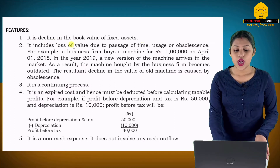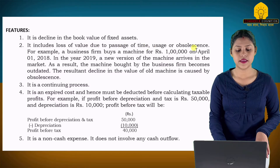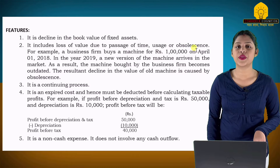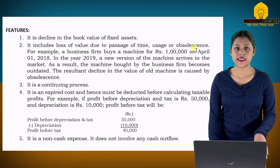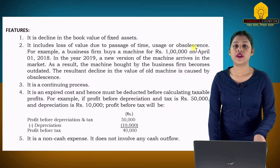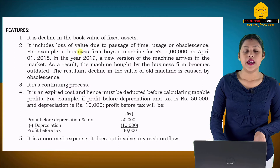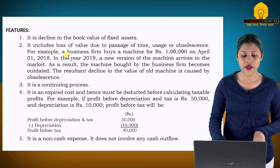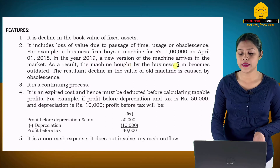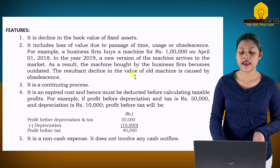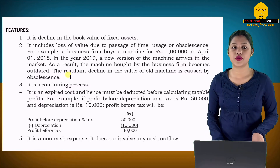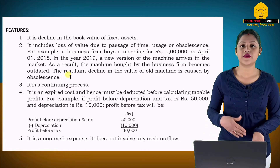Second, depreciation includes loss of value due to passage of time, usage, and obsolescence. After the lifetime, when you use the fixed asset, the price of the fixed asset will become obsolete and will not remain the same. For example, a business firm buys a machine for Rs. 1 lakh on April 1, 2018. In the year 2019, a new version of the machine arrives in the market. As a result, the machine bought by the business firm becomes outdated. The resultant decline in the value of the old machine is caused by obsolescence.